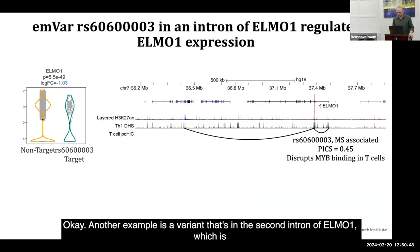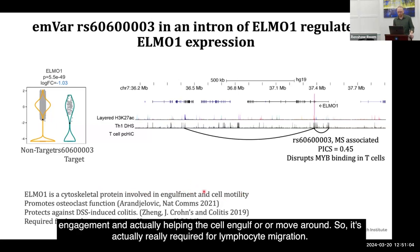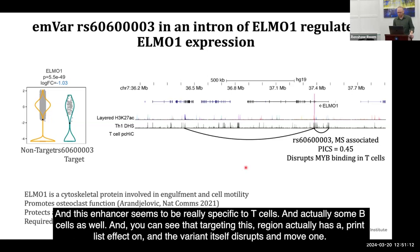Another example is a variant in the second intron of ELMO1, which is a known molecule involved with cytoskeletal and actin engagement, actually helping the cell engulf or move around — it's really required for lymphocyte migration. This enhancer seems to be really specific to T cells and some B cells as well. Targeting this region actually has a pronounced effect on ELMO1 expression, and the variant itself disrupts an IKZF1 motif.